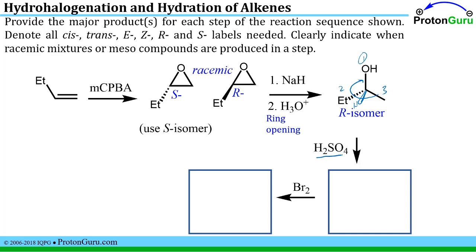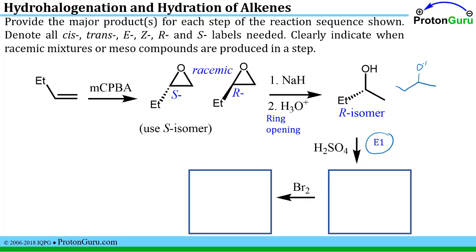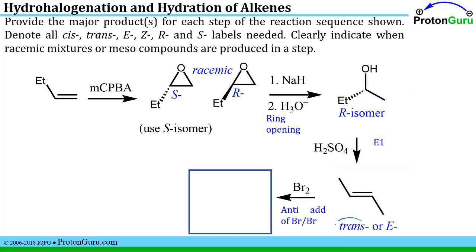Next the alcohol reacts with sulfuric acid — that's an E1 reaction from alcohol reactions. It produces an alkene. The double bond could form at one of two spots, but we favor the more substituted side. The problem asks us to label this; it can be labeled trans or E — both are correct labels for that alkene.